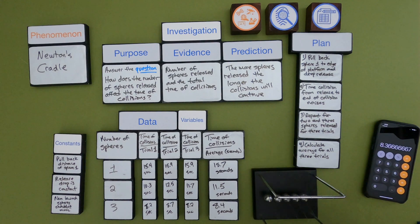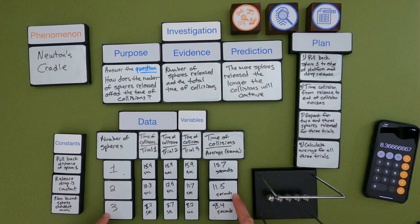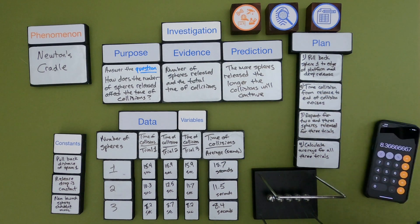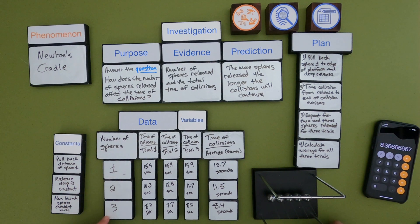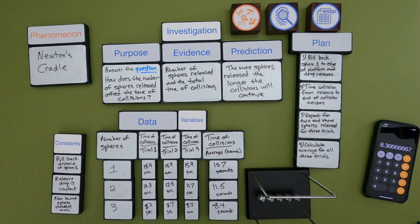Now I've got some results. With releasing one ball, the average was 15.7 seconds; with two balls, 11.5 seconds; and three balls, 8.4 seconds. My prediction was wrong — and that happens all the time in science. I thought it would last longer if I was releasing more, but it doesn't. This makes me better understand the Newton's cradle. Maybe some of that energy is lost to sound — maybe something like that. By doing the investigation, I better understand the phenomena.